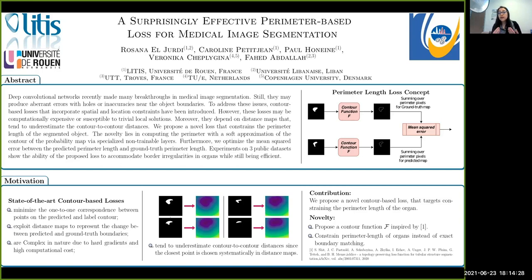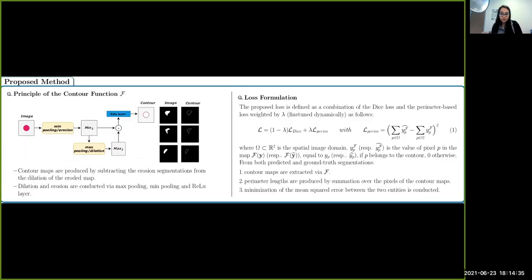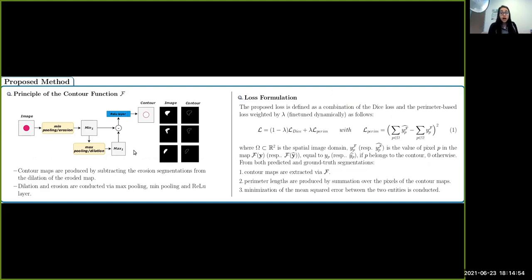This allows for better and easier gradients, and thus allows us to decrease the computational costs throughout training. The contour function F is a simple morphological gradient step where contour maps are produced by subtracting the erosion of the segmentation map from the dilation of the eroded map. The dilation and erosion are conducted via max and min pooling, followed by a ReLU layer.